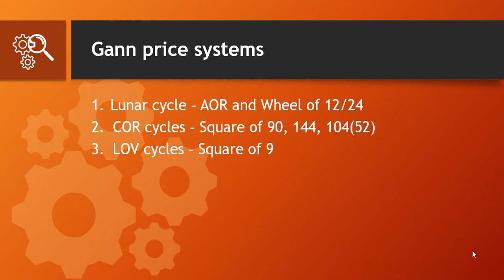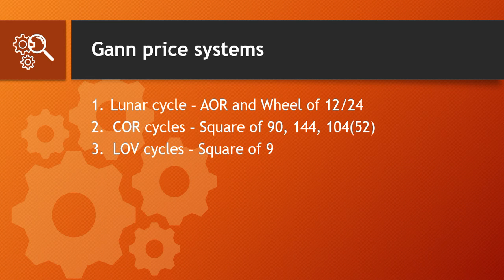I've seen a lot of websites and people teaching the Square of Nine and calling it the WD Gann system. I've also seen people selling just the Square of Nine for five thousand or ten thousand dollars — but that is not going to work for you unless you know Robert Gordon's Seven Days and the LOV system. If you do not know the cycle, how are you going to use the Square of Nine? The cycles are more important than price. If you don't have the correct time cycles, you cannot get WD Gann's price system working.